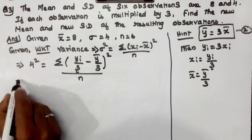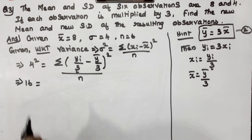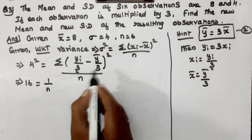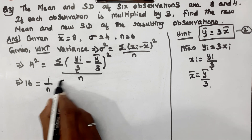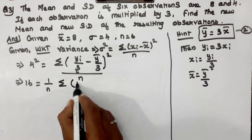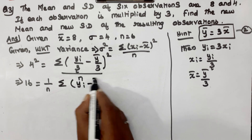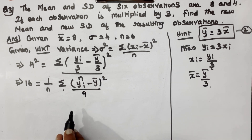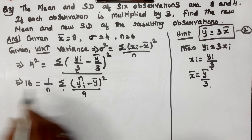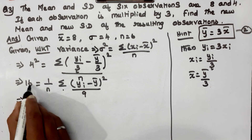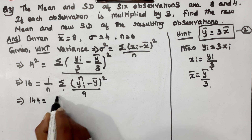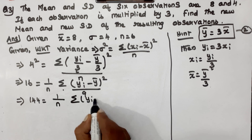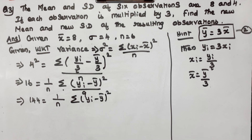4 squared equals 16. Rearranging, this equals (1 divided by 9) times the summation of (yi minus y-bar) squared, divided by n. So 16 times 9 equals 144, which equals (1/n) times the summation of (yi minus y-bar) squared.